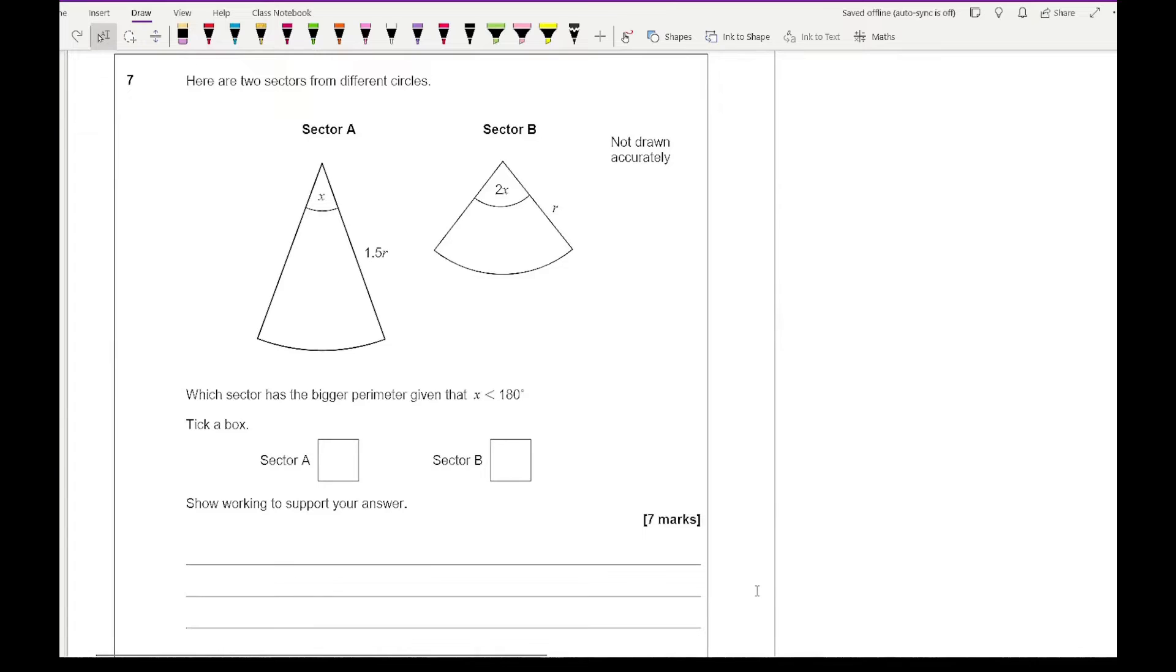For this, it's all about working out the perimeters from each of the separate sections. You will need a bit of space, and in the exam you could ask for additional sheets of paper. Looking at sector A, the formula for the perimeter is theta over 360 times 2 pi r plus 2r. This is the formula we're going to be using.